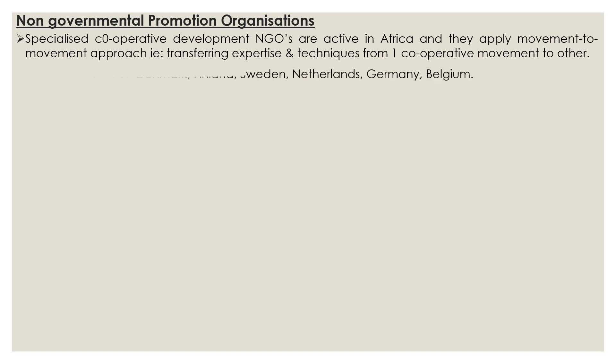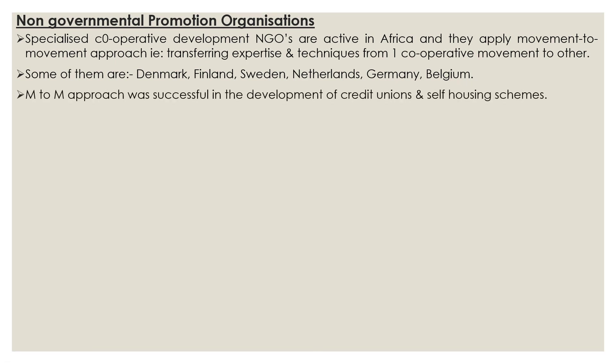The cooperative centers of various countries such as Denmark, Finland, Sweden, Netherlands, Germany, Belgium, etc. are some examples where this movement-to-movement approach was implemented. Try to identify the various cooperative centers with regard to all these different countries — there will be a cooperative center for Denmark, for Sweden, for Germany. Movement-to-movement approach was successful in the development of credit unions and self-housing schemes.